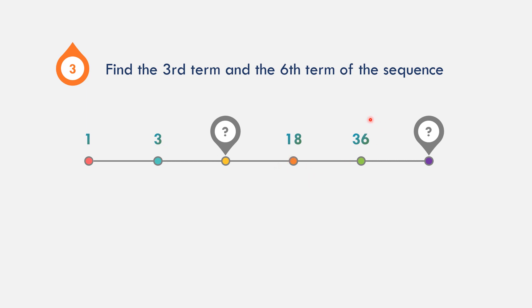18 times 3 is 54 — that cannot be right. Let us try multiplying by 2. 18 times 2 is equal to 36. So as you can see, the pattern is we multiply by 3 and then multiply by 2, alternating.